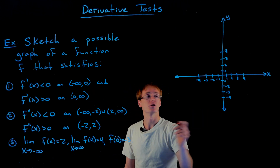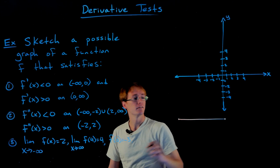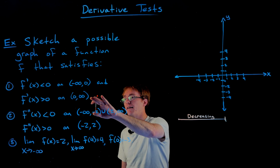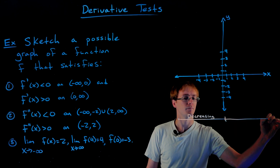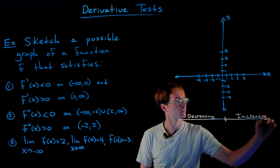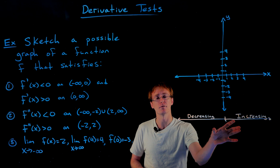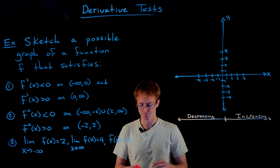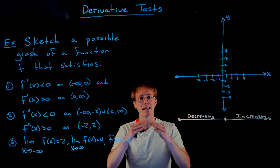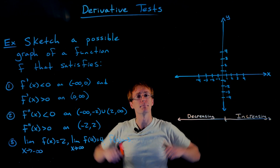On the interval to the left of zero, from negative infinity to zero, our first derivative is negative, so our function is decreasing. To the right of x equals zero, the first derivative is positive, so our function is increasing. The second derivative tells us about concavity. Where the second derivative is negative, the graph bends down and is concave down. When the second derivative is positive, the graph bends upward and is concave up.